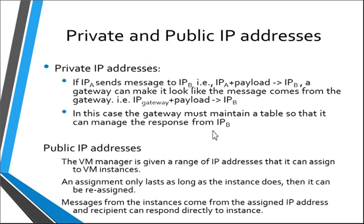This allows for a certain amount of game-playing in terms of IP addresses. If machine A sends a message to machine B — an IP message with a header plus a payload — then a gateway can make it look like the message comes from the gateway by changing the source IP address. As far as the recipient is concerned, it's coming from the gateway. The recipient responds to the source of the message, so it would respond to the gateway, and the gateway has to have a table so it can pass the response back to machine A.